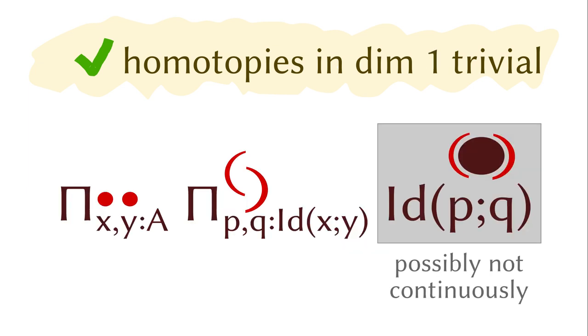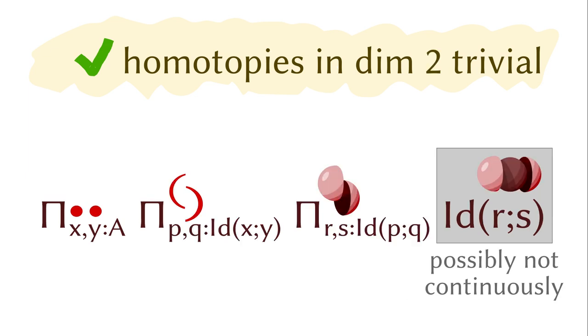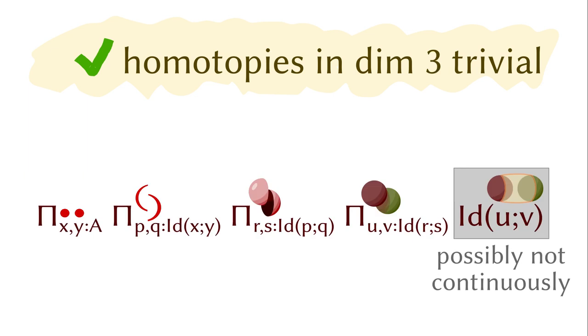For the next dimension, it says any circle can be filled, though the choice again might not be continuous. The same applies to dimension two, dimension two, dimension three, and so on.